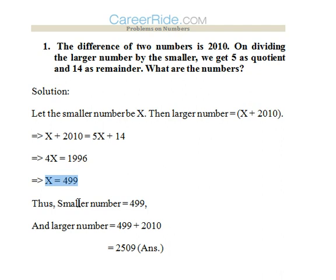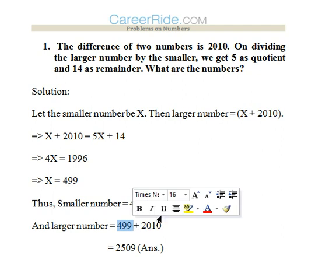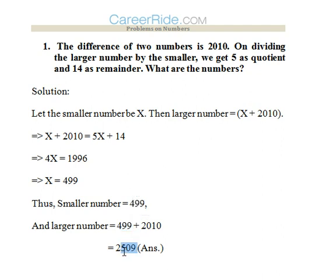So the smaller number would be 499 and the larger number would be 499 plus 2010, that is 2509 would be the larger number.